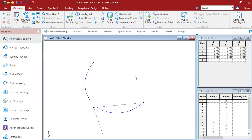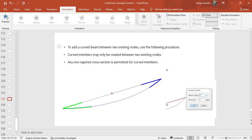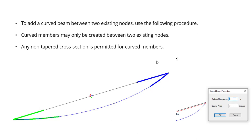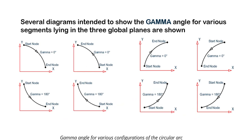Curve members may only be created between two existing nodes, and any non-tapered cross section is permitted for curve profiles. To give you more clarity, I've specified how to set the gamma angle for different axis categories. For the X-Y plane: when you enter 0 degrees, it generates your curvature within that same plane. From any start point, the gamma angle determines which direction the curve goes.